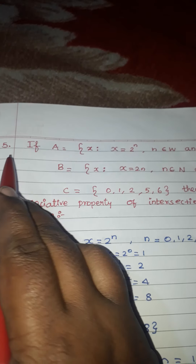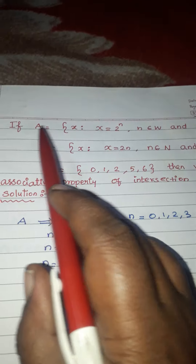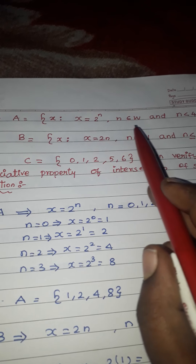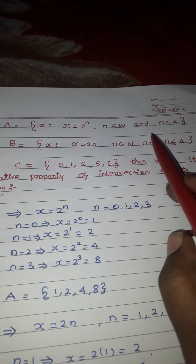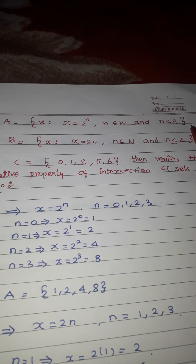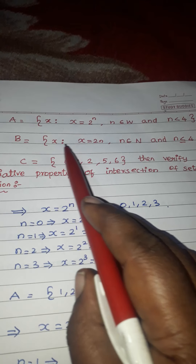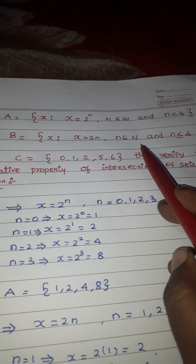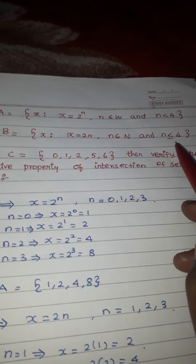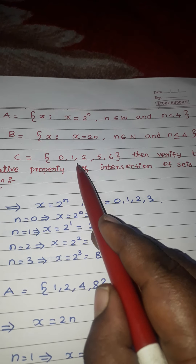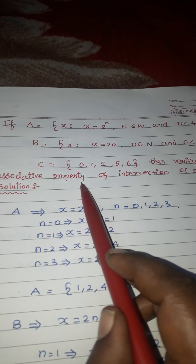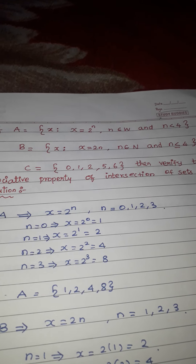Next, we will solve the fifth sum. If A equals x such that x equals 2 power n, where n belongs to W and n less than 4. B equals x such that x equals 2n, where n belongs to N and n less than or equal to 4. C equals {0, 1, 2, 5, 6}. Then verify the associative property of intersection of sets.